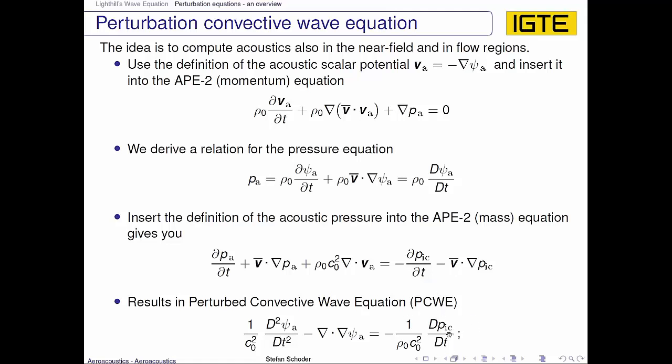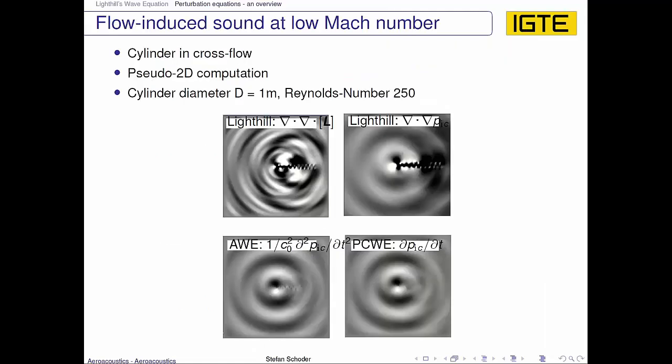If you would like to have some deeper knowledge about the perturbed convective wave equation, look up some publications from our institute — they are well described. Additionally, as mentioned before, the motivation was to compute acoustics even in regions where flow is present. Therefore we did a study on a cylinder in cross-flow; it's a pseudo-2D computation at very low Reynolds number.